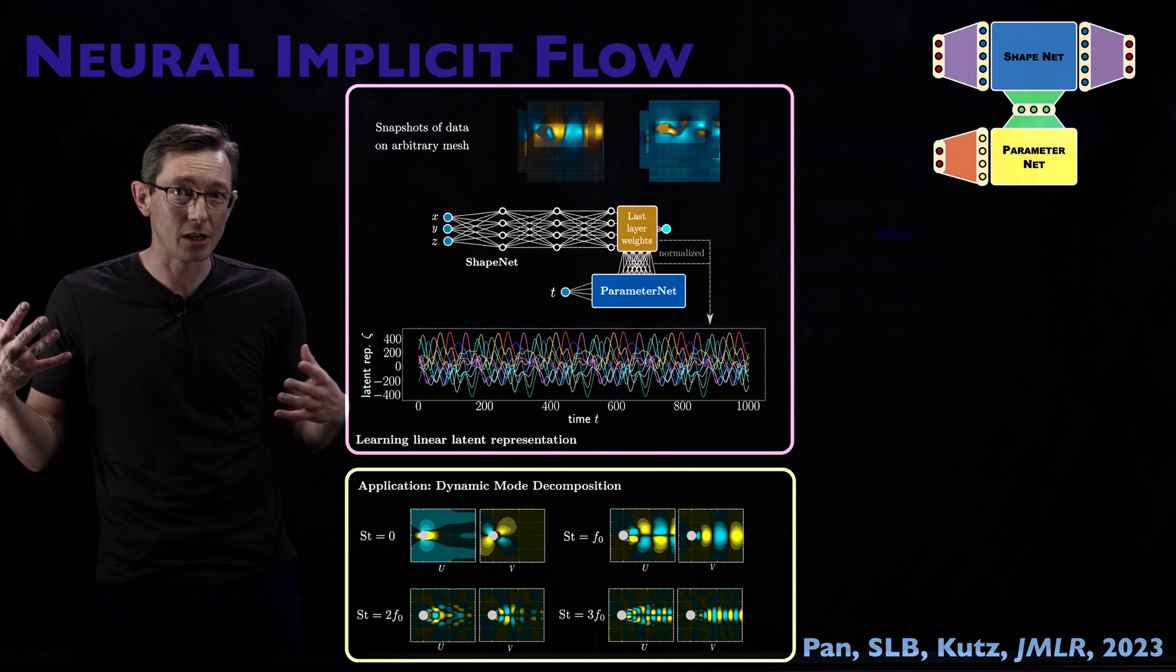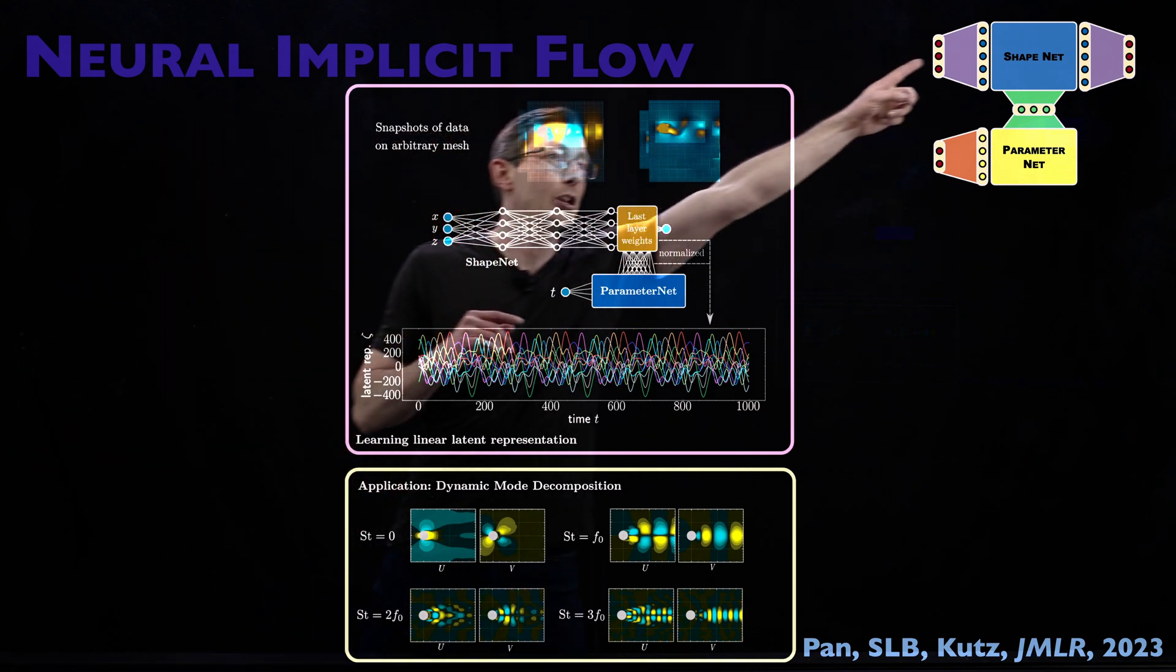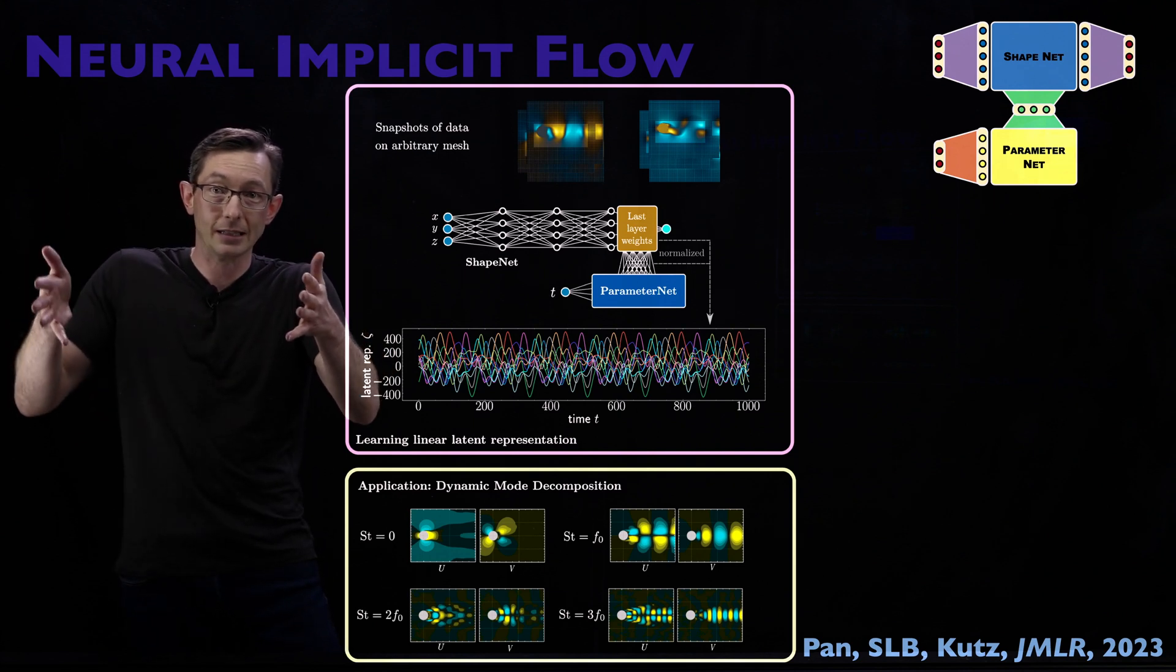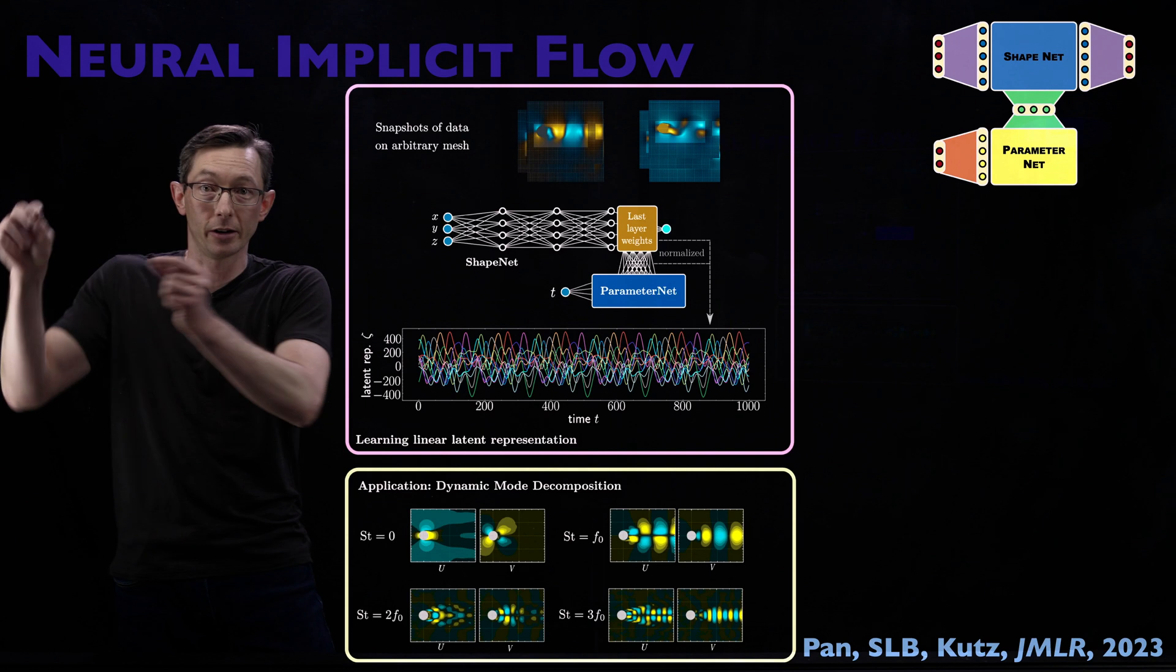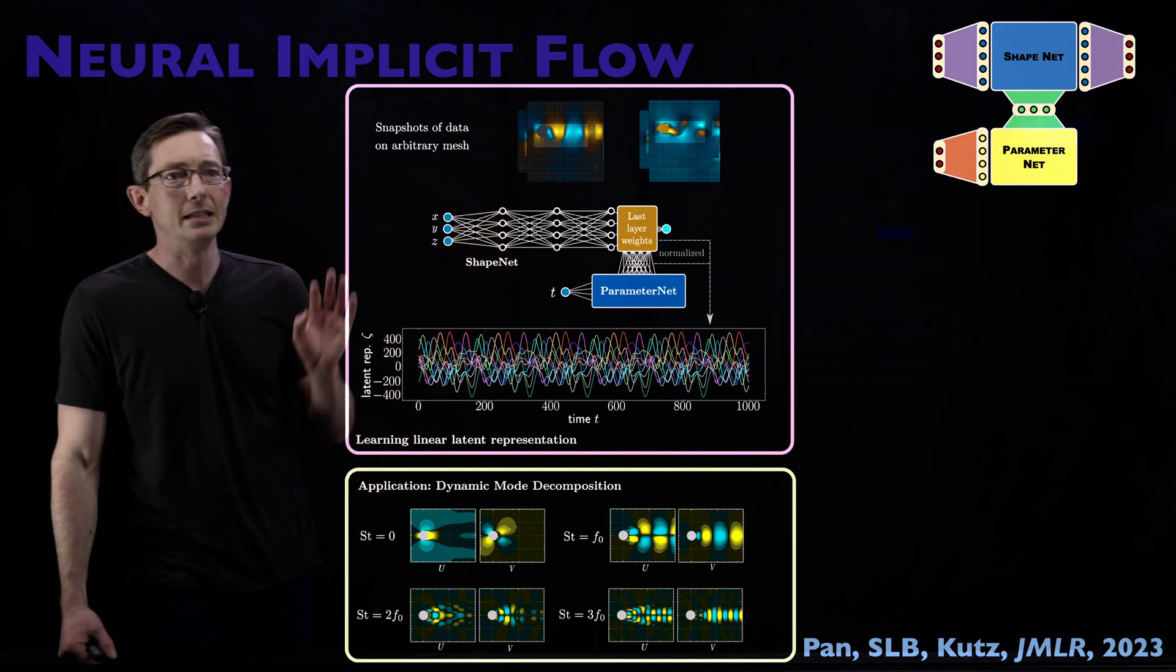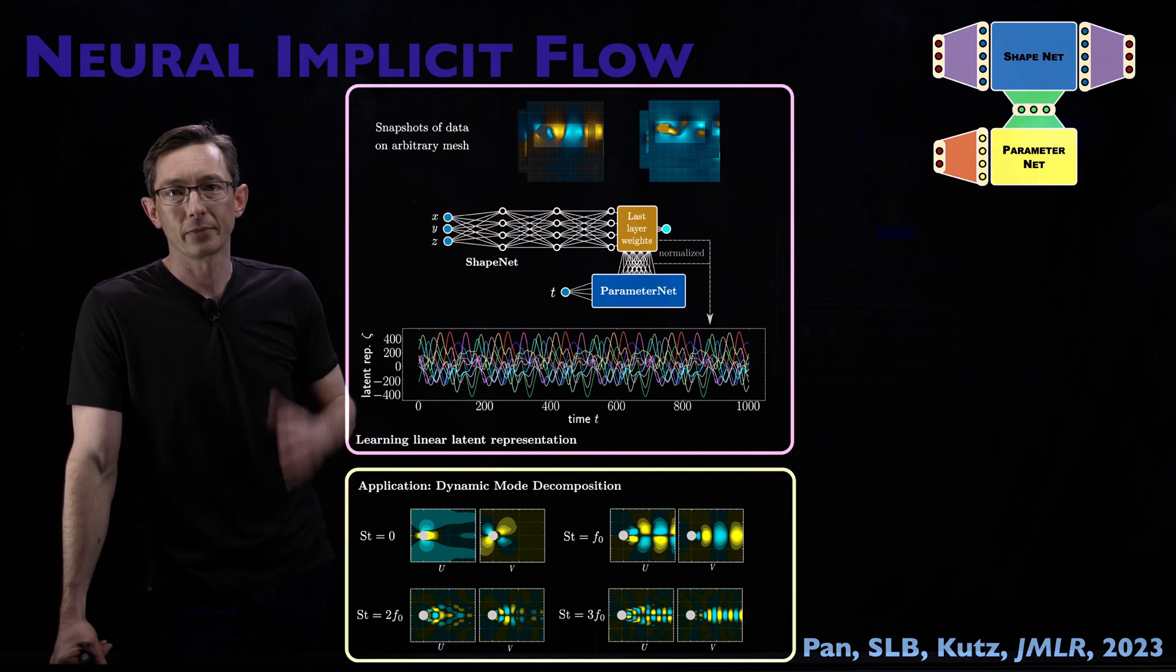But because this Shape Net is just a function, the output fields as a function of X, Y, and T, I can put in different X, Y, and T at those weird irregular mesh locations. So really cool idea here is that you can actually work with arbitrary mesh data. That's super powerful. And I know colleagues in industry are using this because that's one of the features that's hardest - irregular meshes.